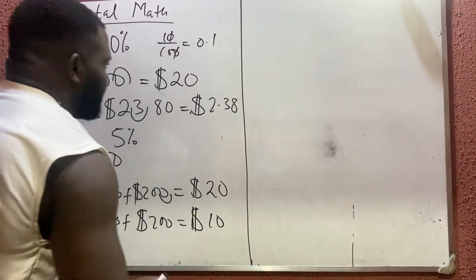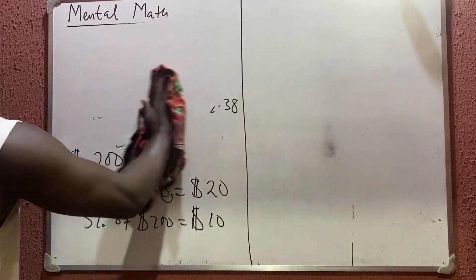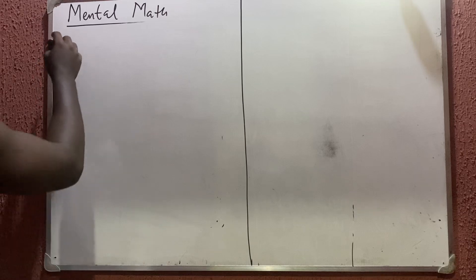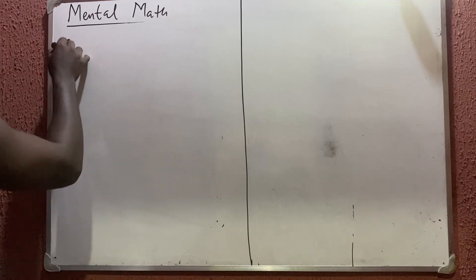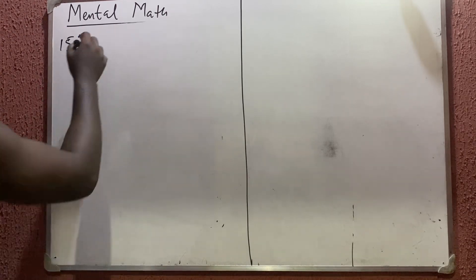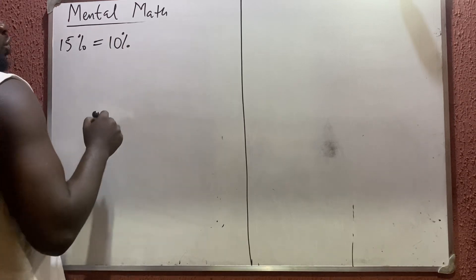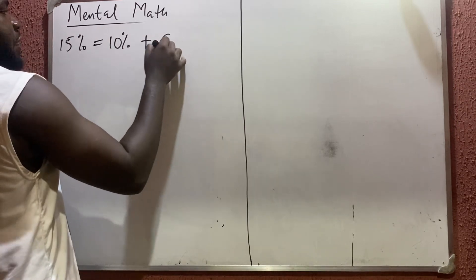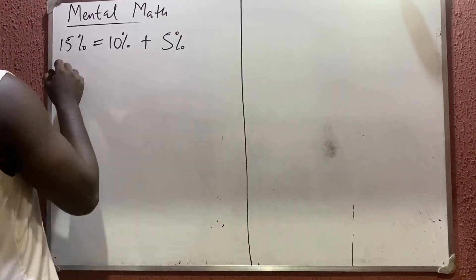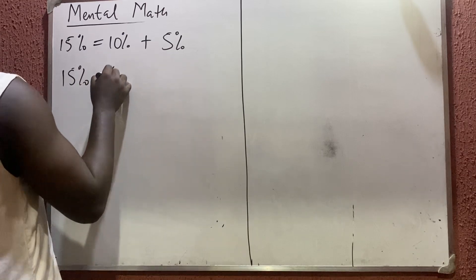Now what about 15 percent? For 15 percent, you get 10 percent the normal way I showed for 10 percent, then get 5 percent the way I showed for 5 percent, and then add them together.